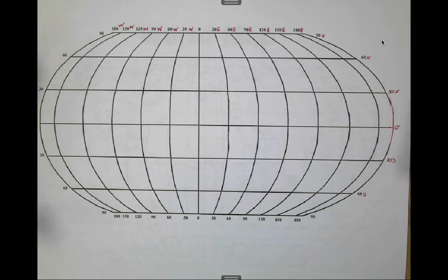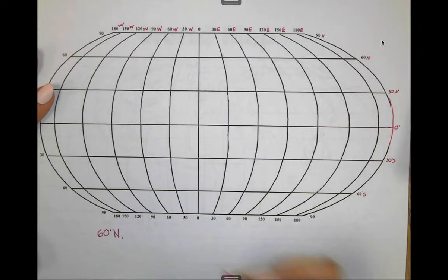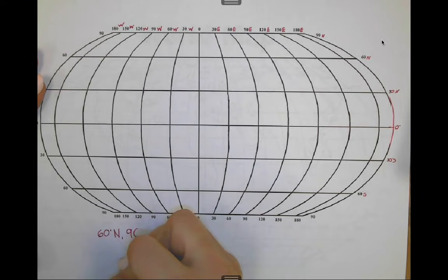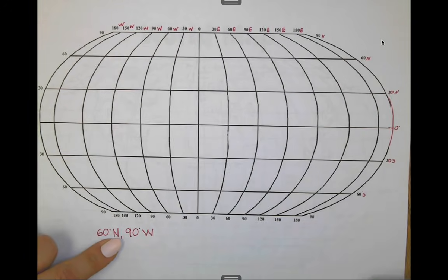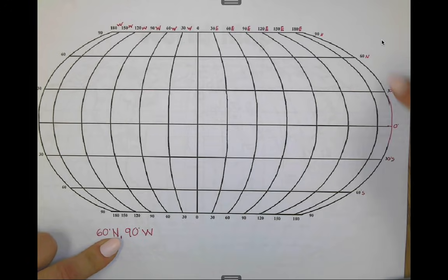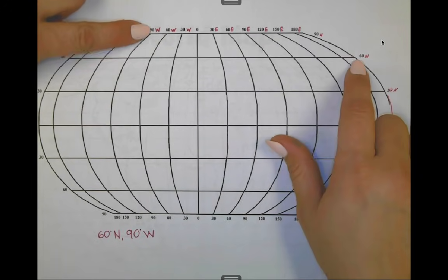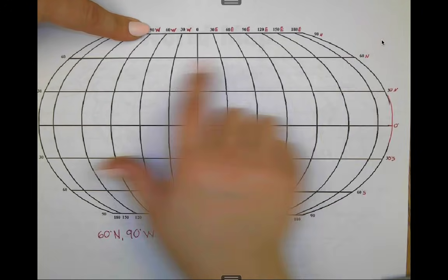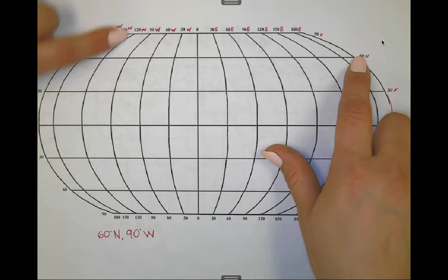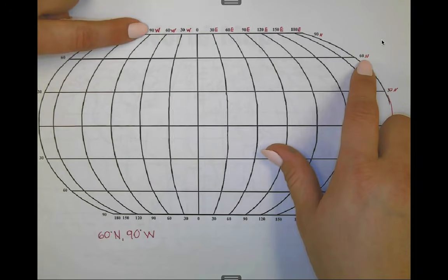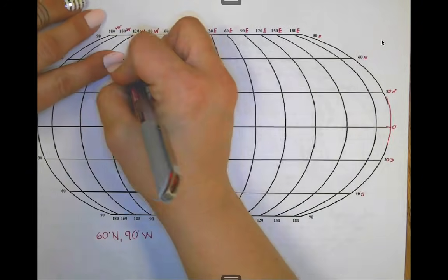Let's look for 60 degrees north and 90 degrees west. 60 degrees north tells me we're in the northern hemisphere. 90 degrees west falls upon this line. So I know for my latitude I'm going to stay parallel and go straight, but for my longitude, because of this grid, I'm going to have to bend with my line. So 90 degrees west and 60 degrees north — I'm going to come together, bend, and end up right here.